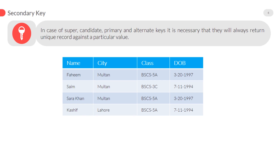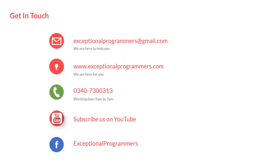Name, city, class, and date of birth are all secondary keys. If we want to retrieve the name of a student, it is possible that more than one student has the same name — and the same case applies with city, class, and date of birth. Please subscribe to us on YouTube and like us on Facebook. See you in the next lecture!